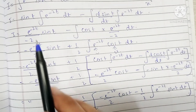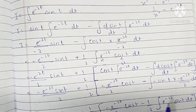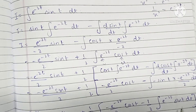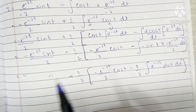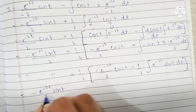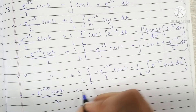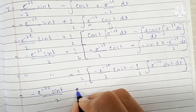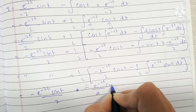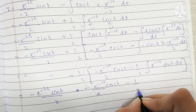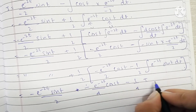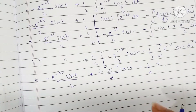This integral is exactly what we started with, so I'm going to place it as i. Taking terms outside, this becomes minus e raised to minus 2t upon 4 times cos t, minus 1 by 4 times i.